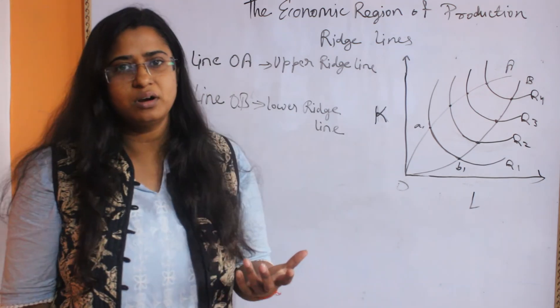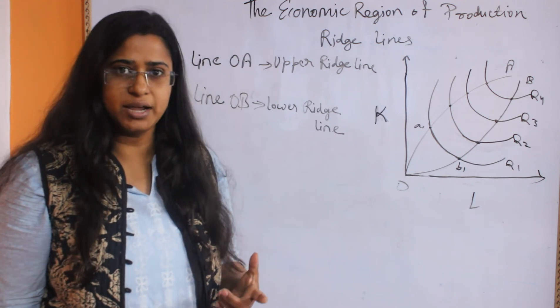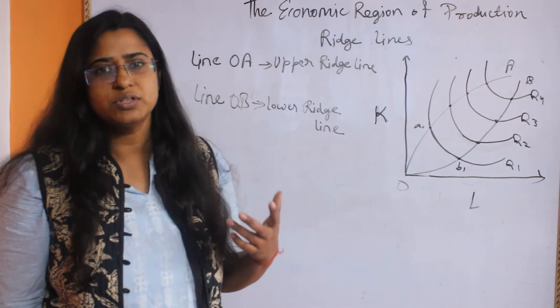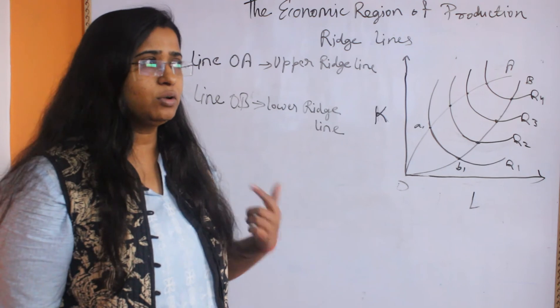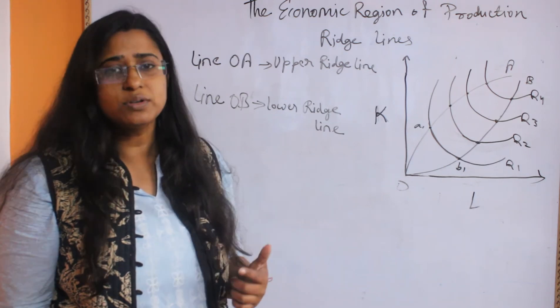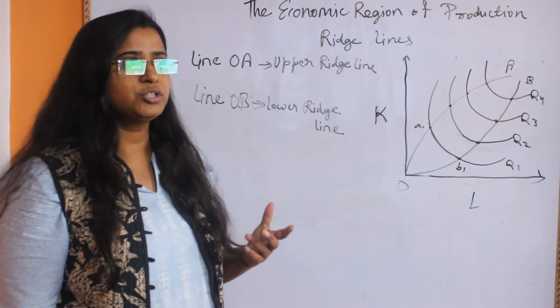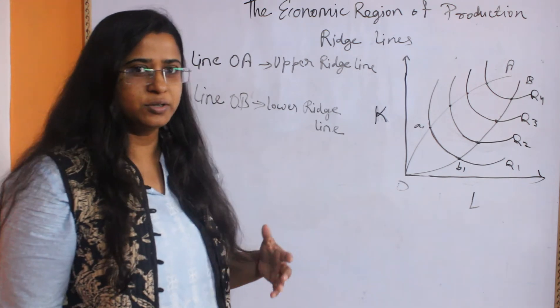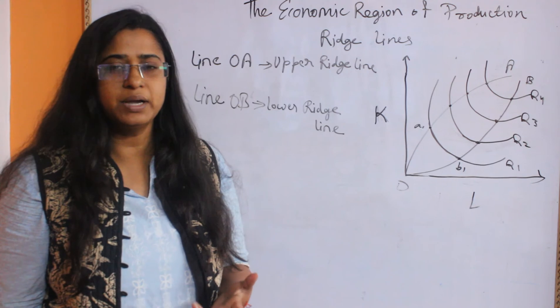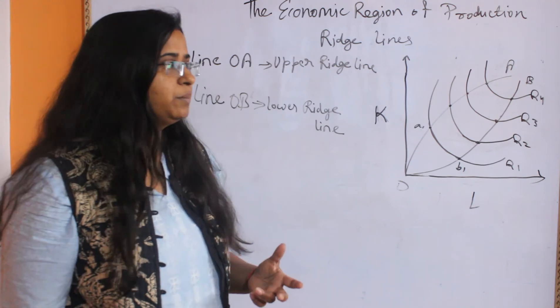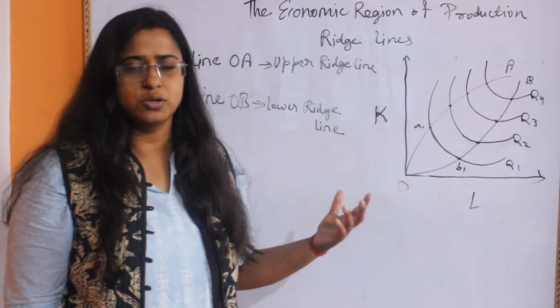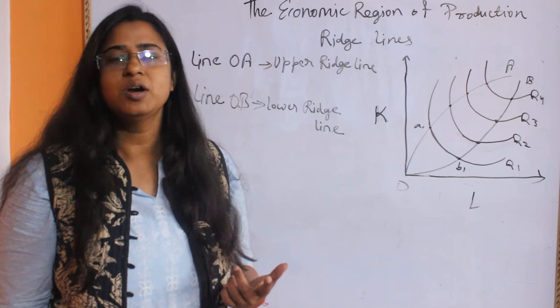Here is the explanation of the ridge lines. You know that producers are rational, and the resources they have are limited. They will not waste their money by employing more factors of production which have negative productivity.